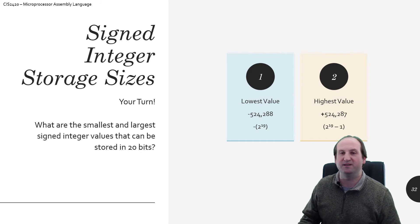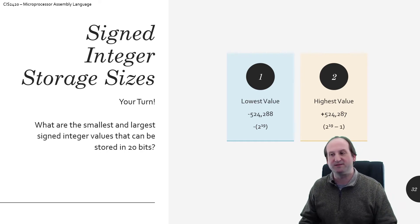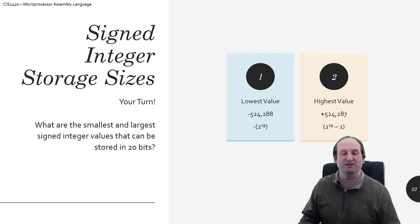So the true formulas are as such. So for n number of binary bits, the smallest value, the lowest value that can be stored in those number of bits, is negative 2 to the n minus 1 power. So that's 20 bits minus 1 is 19. So that's how I get negative 2 to the 19th power, or in this case, negative 524,288.